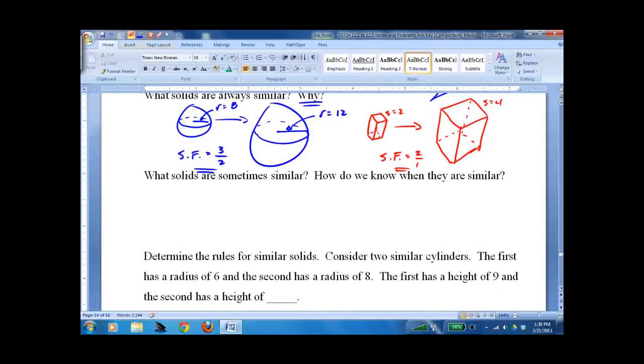So what solids are sometimes similar? That's easy, it's all the others. Which are prisms, cylinders, pyramids, and cones.